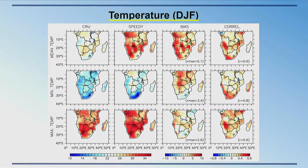Looking at temperature: I have the CRU observed data, the SPEEDY simulation, the bias, root mean square error, temporal correlation, and spatial correlation. Generally, SPEEDY seems to have a warm bias over the majority of southern Africa, and particularly along the west coast, which appears to have an influence on precipitation.